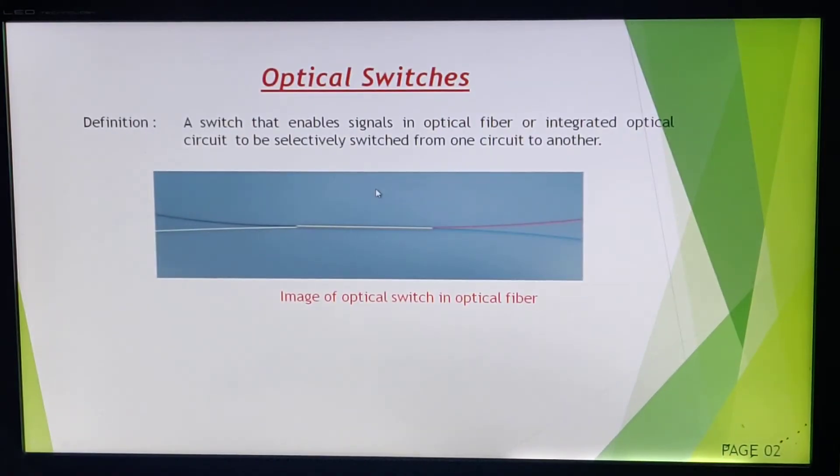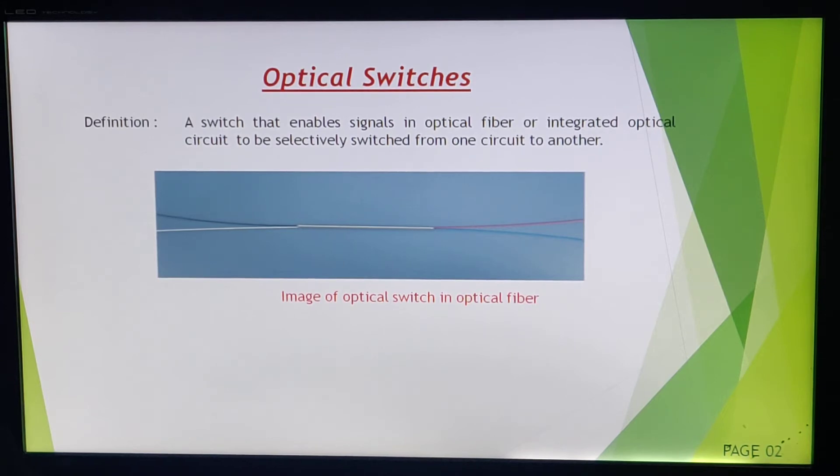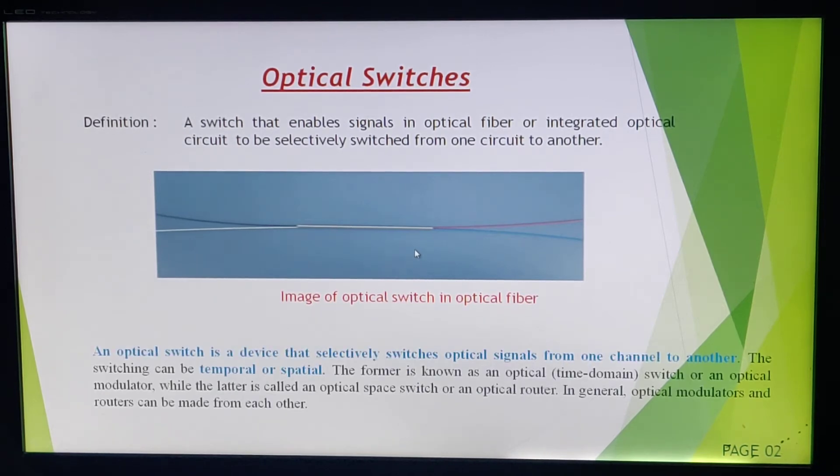So what is an optical switch? We all know a switch is a device which can switch the signal from one end to another, means we can turn on or off the signal passing through that device. Definition: a switch that enables signals in optical fiber or integrated optical circuit to be selectively switched from one circuit to another. What do you mean by selectively switched? It depends on us which signal should be transmitted or not. This is a diagram image of optical switch in optical fiber. Two optical fibers are coming out from this path, so we can selectively switch which signal should be transmitted or not.